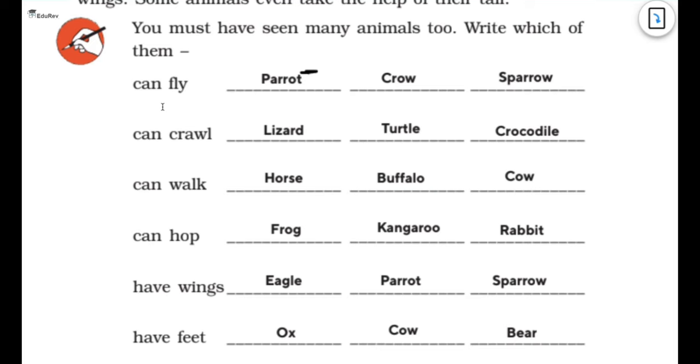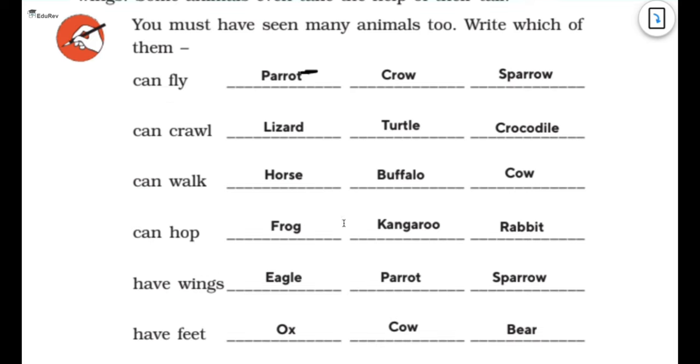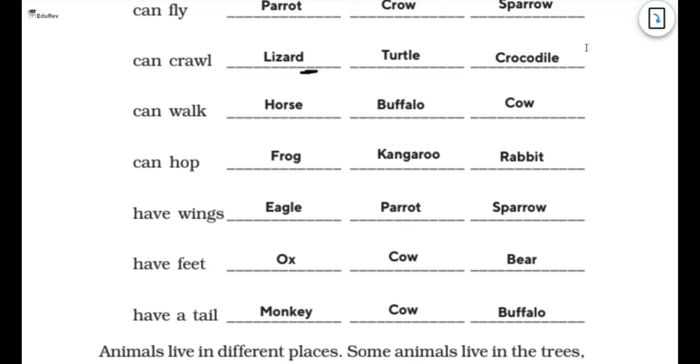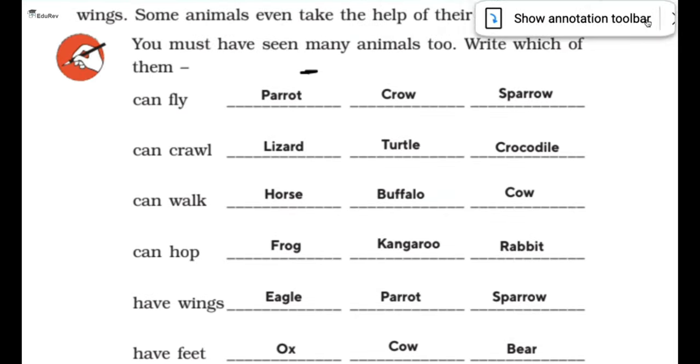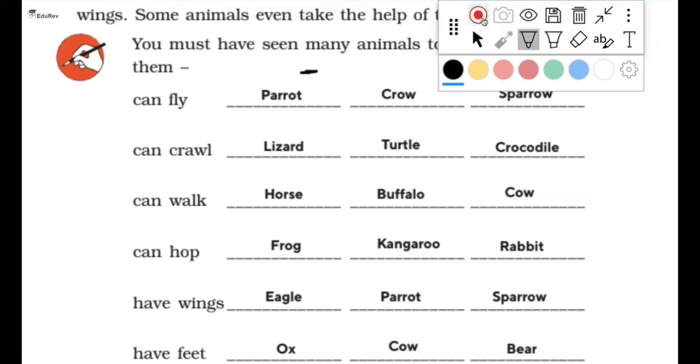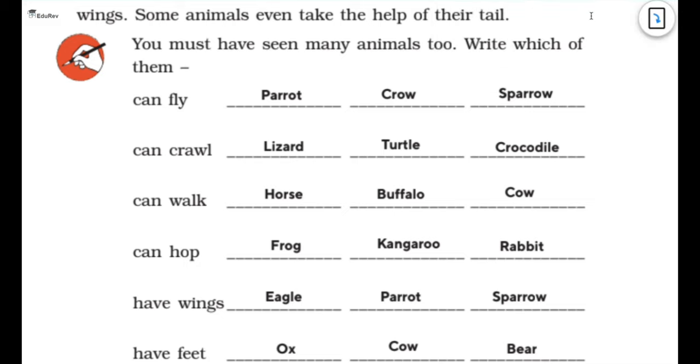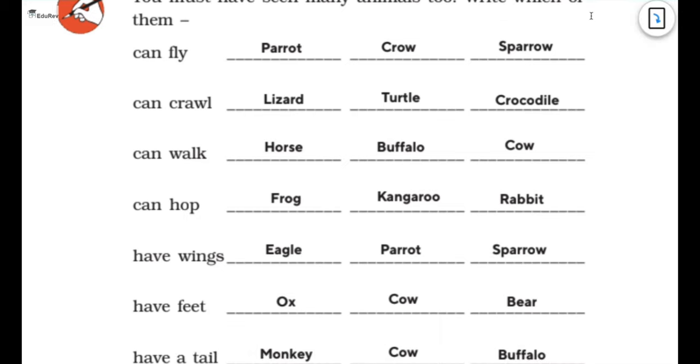You must have seen many animals too. Write which of them can fly, crawl, walk, hop, wing, feet and have a tail. I've written a few for you. The animals which can fly are parrot, crow, sparrow.